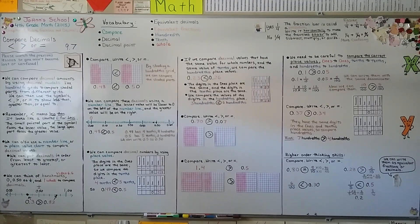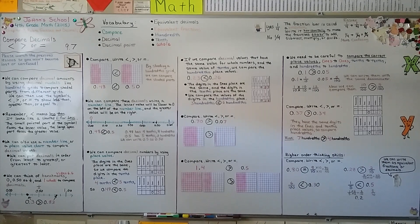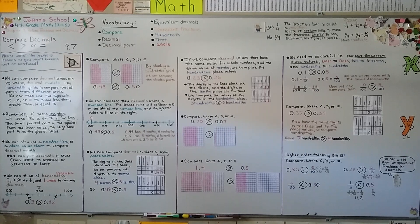Remember, when comparing decimals, start by comparing each place value: ones to ones, tenths to tenths, and hundredths to hundredths. This is the end of Chapter 9; we're moving on to Chapter 10 to learn about two-dimensional figures or shapes. Have a great day!